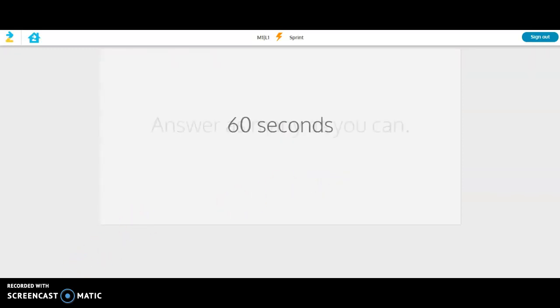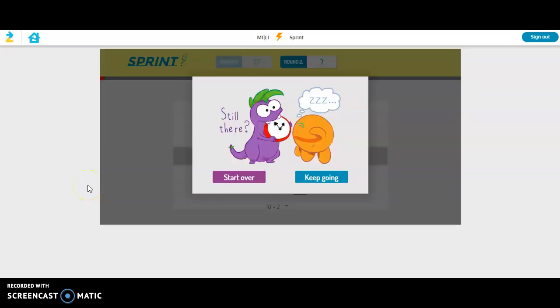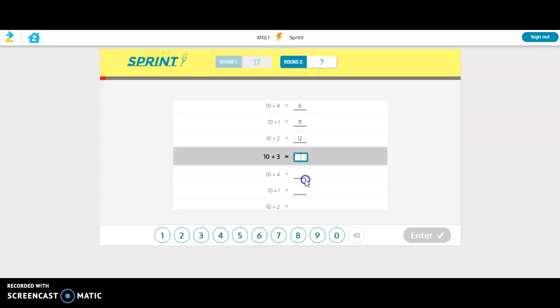We'll click next round and again it's going to time you for 60 seconds to answer as many as you can. Now just a side note, if you do pause or walk away or it takes you an excessive amount of time, you might get this little pop-up that asks if you're still there. You can either choose to start over or just click keep going and it will take you right back to the main sprint activity.